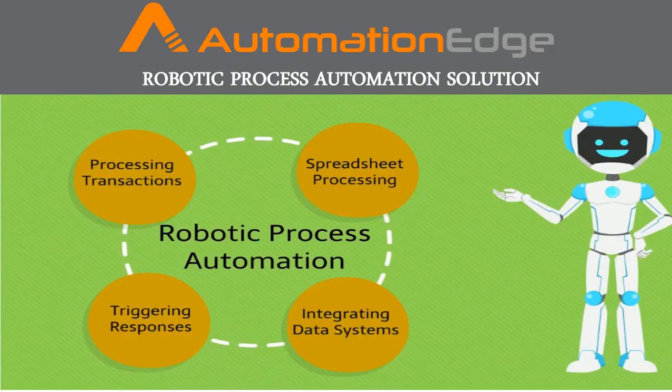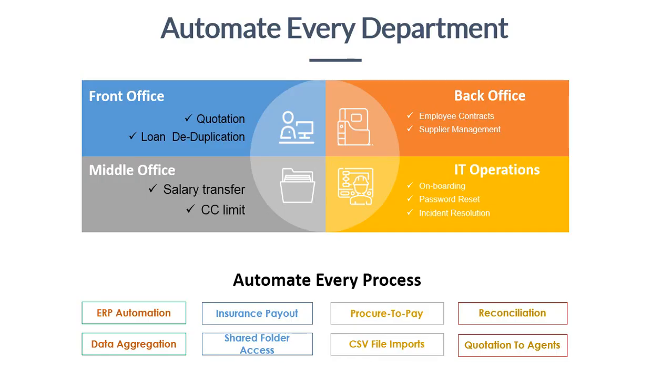Automation Edge also provides Robotic Process Automation, or RPA. RPA is a technology that enables humans to configure computerized robots to perform repetitive data processes such as processing transactions, spreadsheet processing, triggering responses, and integrating data systems. RPA and its intelligent automation ensures operations such as front office, back office, middle office, and IT operations at the fastest speed.